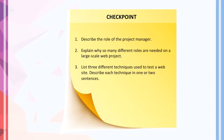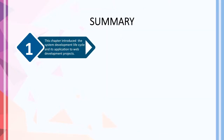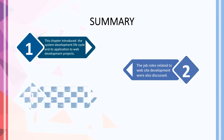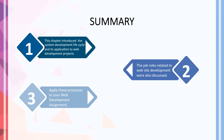At this point, let's do some checkpoint questions you may discuss with your peers: describe the role of the project manager; explain why so many different roles are needed on a large-scale web project; list three different techniques used to test a website and describe each in one or two sentences. To sum up, this chapter introduced the system development life cycle and its application to web development projects, along with the job roles related to website development. Apply these processes to your web development assignments.